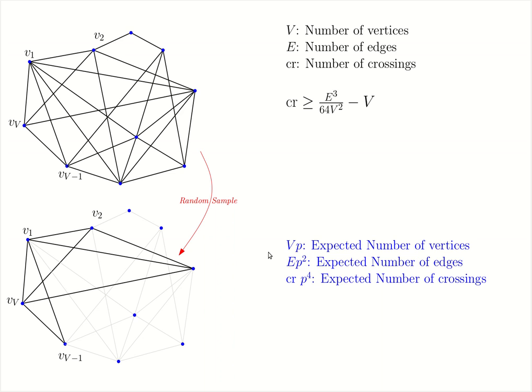This will tell us that if you count the expected number of vertices and the expected number of edges and the expected number of crossings, we'll see the following. That in the sample graph, on average, we'll see V times p vertices, E times p squared edges, and cr times p to the 4 crossings. This is because of the linearity of expectations.